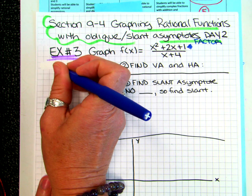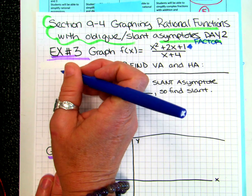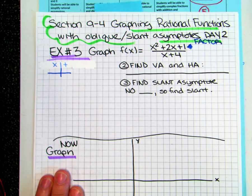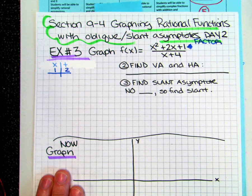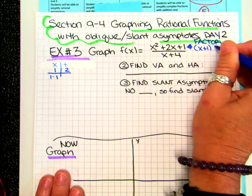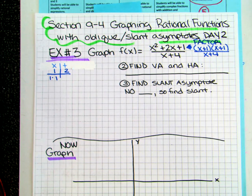x squared plus 2x plus 1 — we make a little table. Jaz, what does it have to multiply to? The 1. And what does it have to add to? 2. There's only one way to get that — 1 times 1. So the factors will be exactly the same: x plus 1 and x plus 1 again. The bottom will be x plus 4. On your quiz, you'll factor — it might use the table, or it could be GCF, or it could be difference of squares.